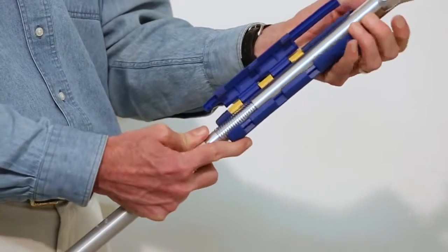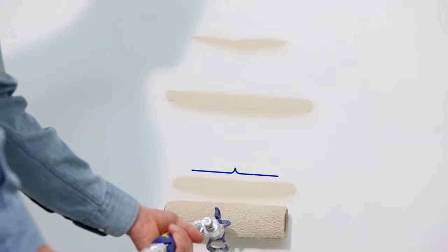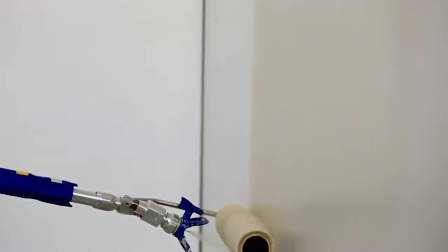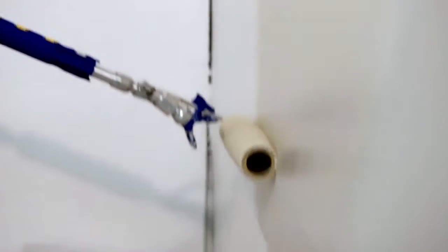To accommodate different materials, the handle moves back and forth to change the width. Simply spray and roll on the downstroke, and only roll on the upstroke.